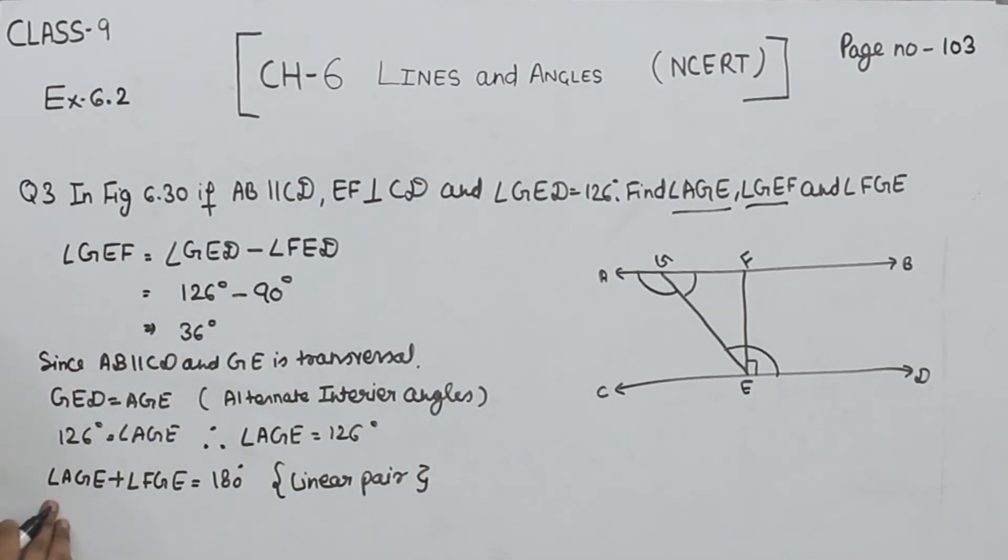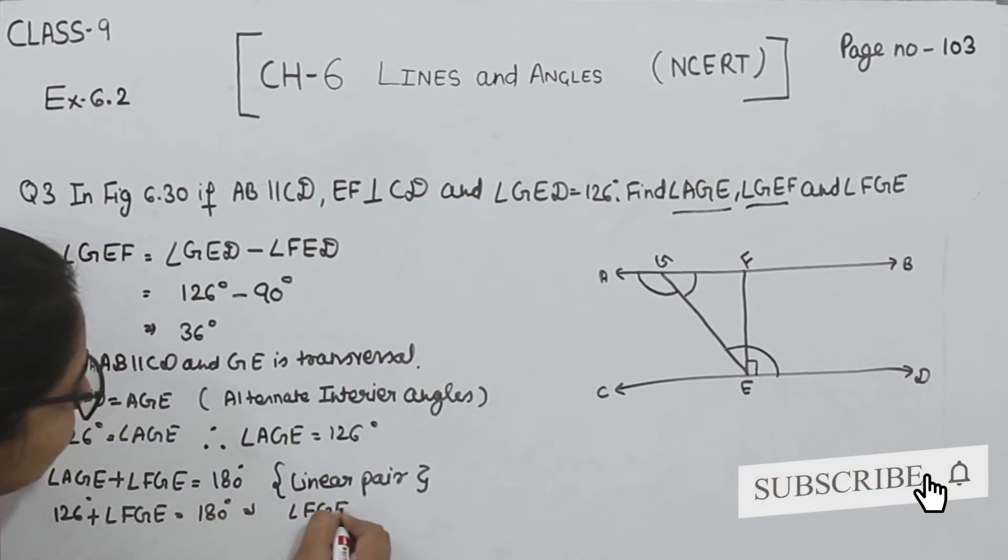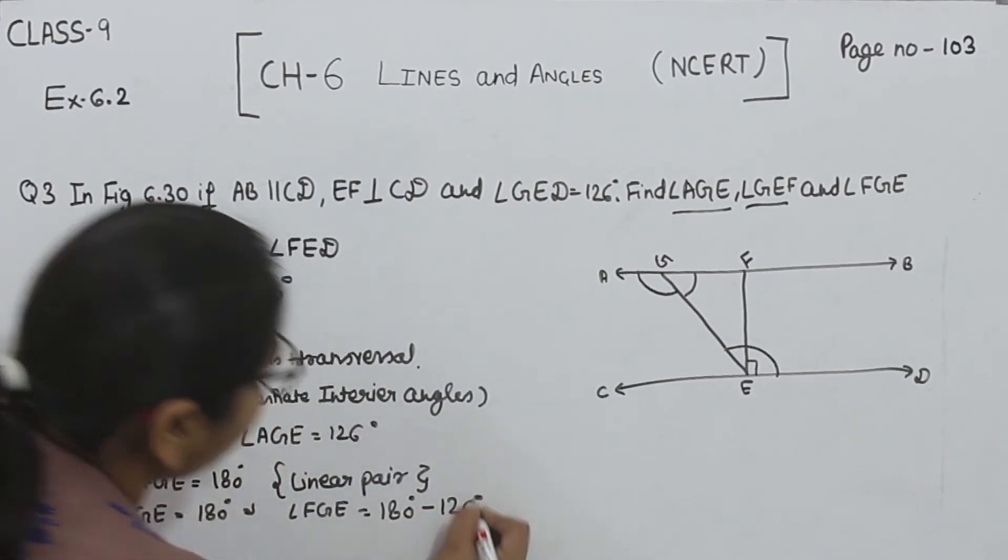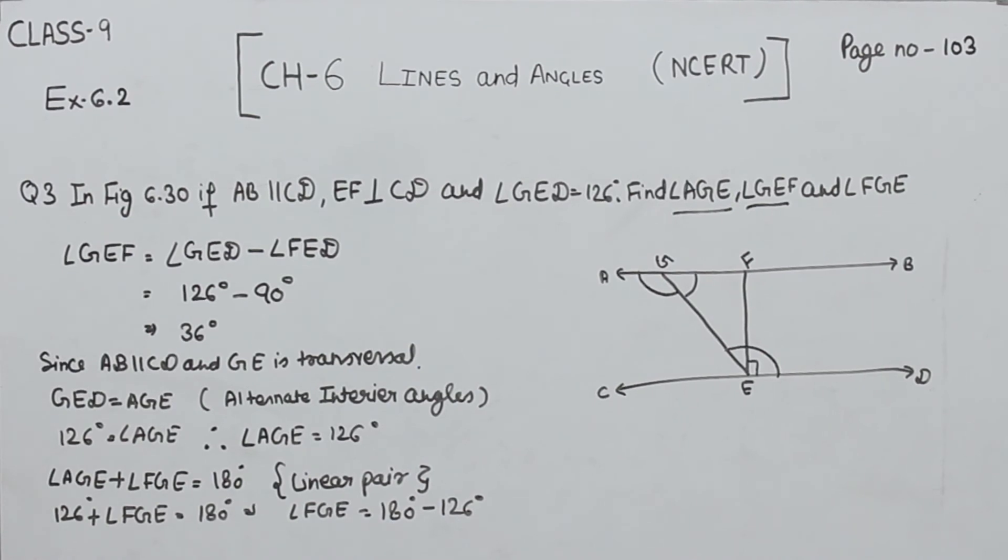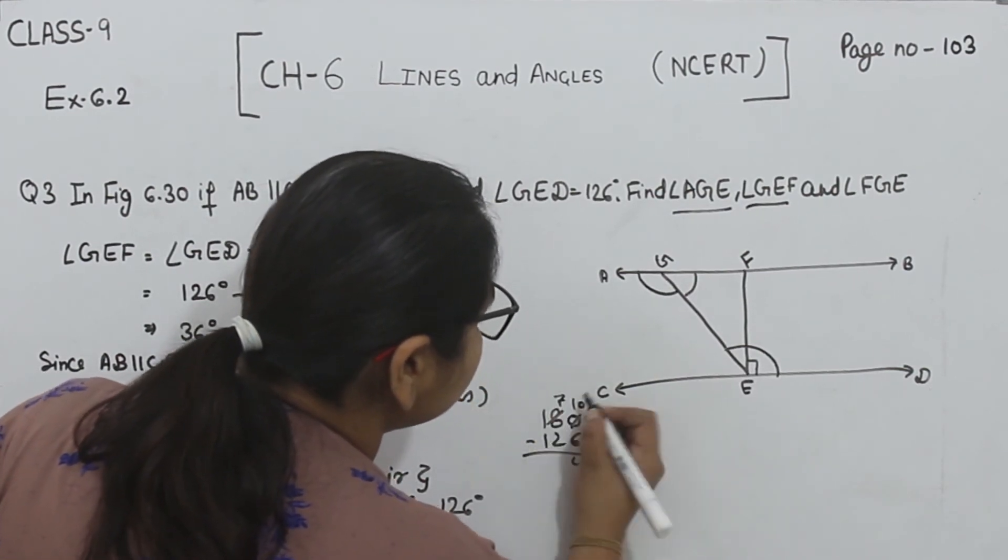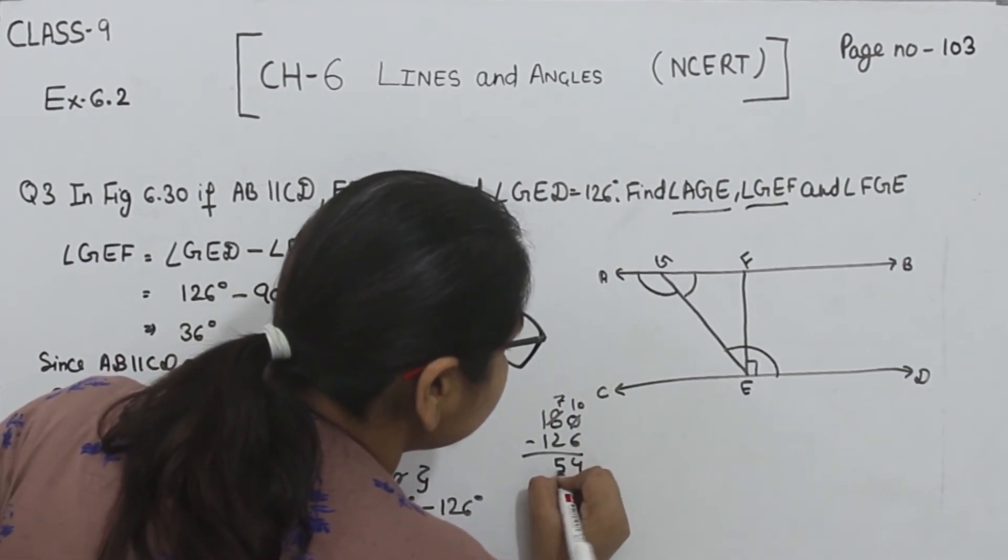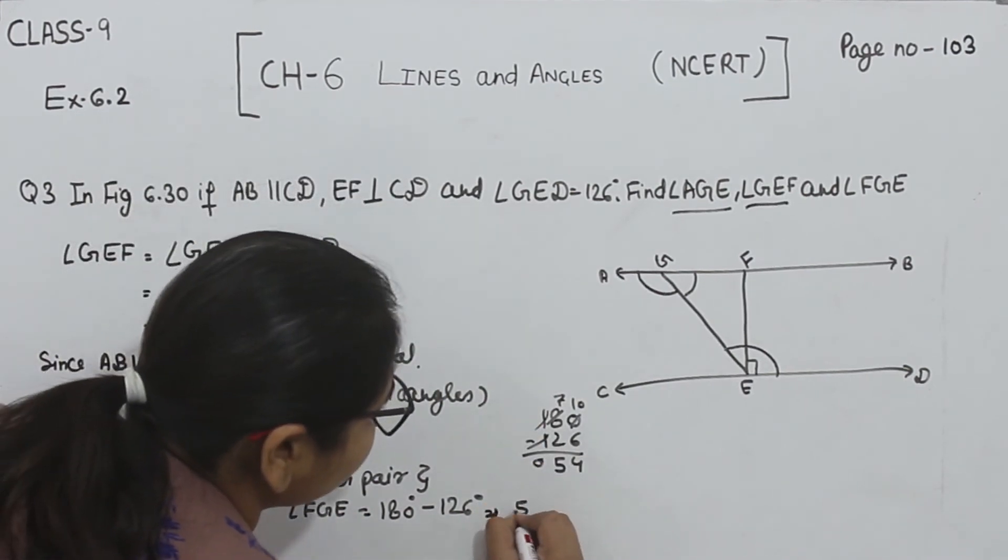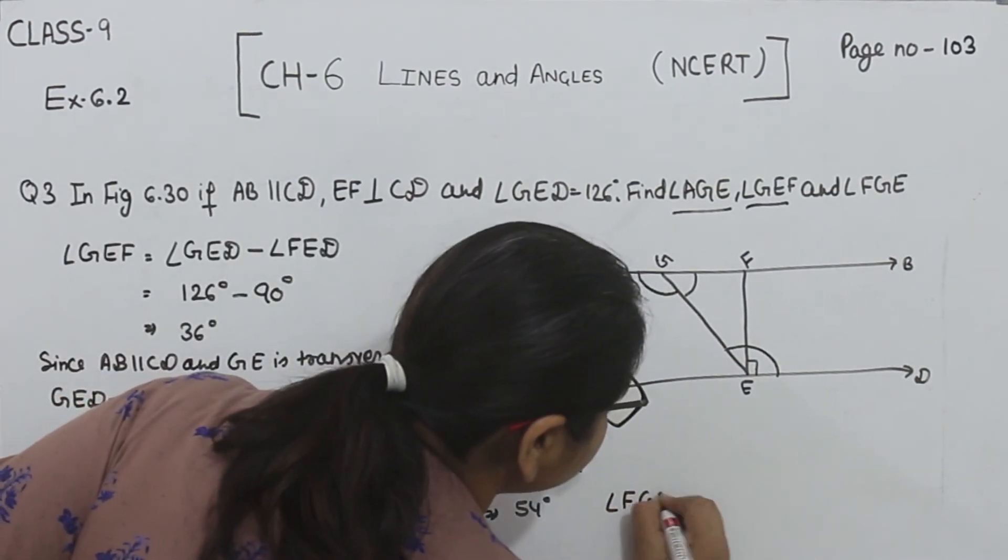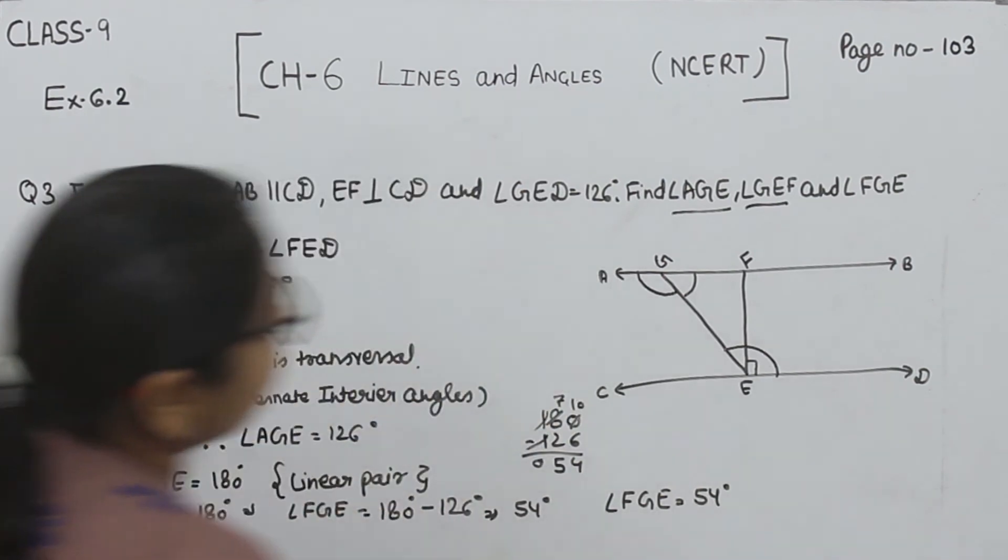Now angle AGE we already know is 126 plus angle FGE equals 180. So angle FGE equals 180 minus 126, which equals 54 degrees. Now angle FGE is equal to 54 degrees.